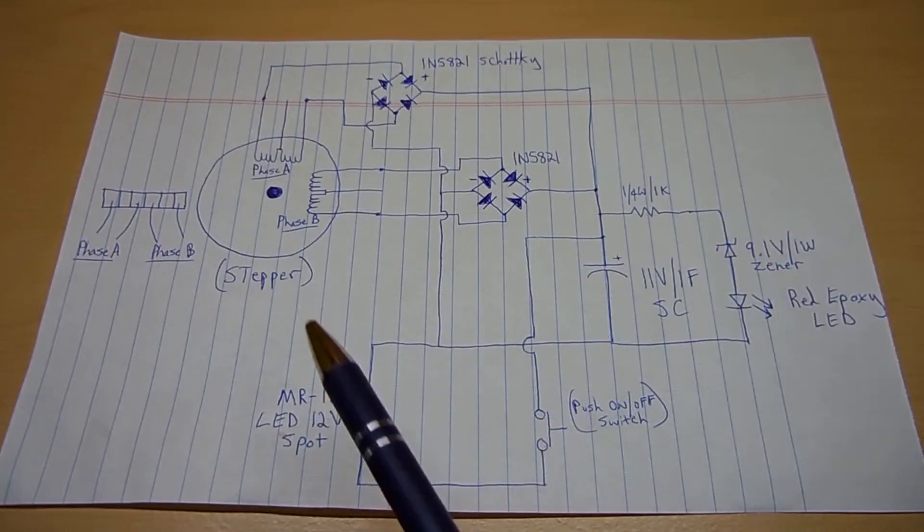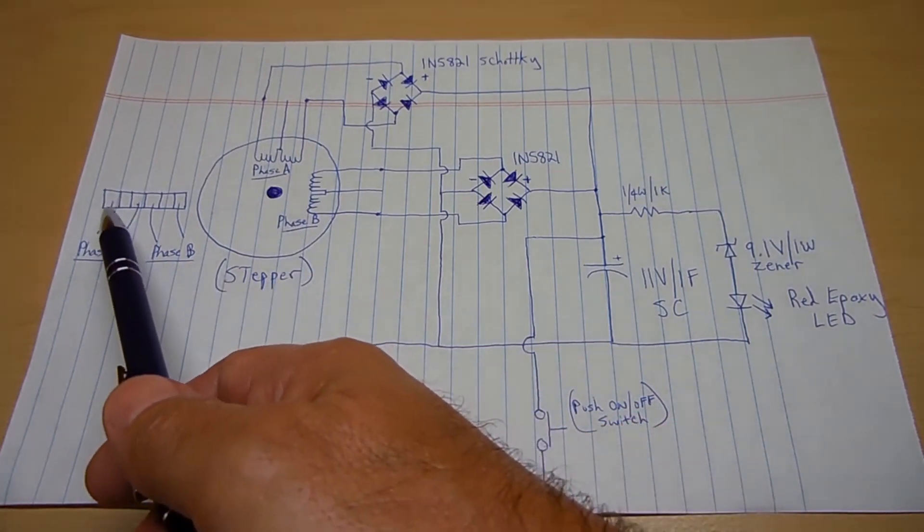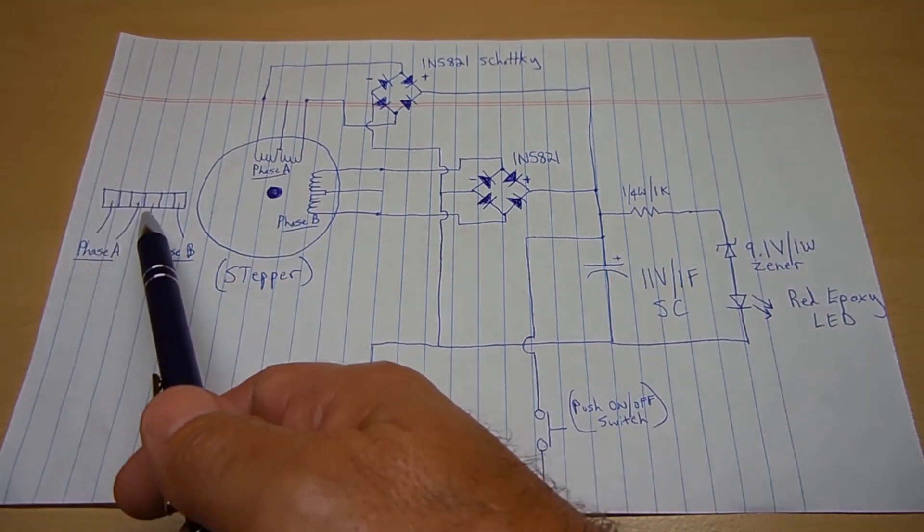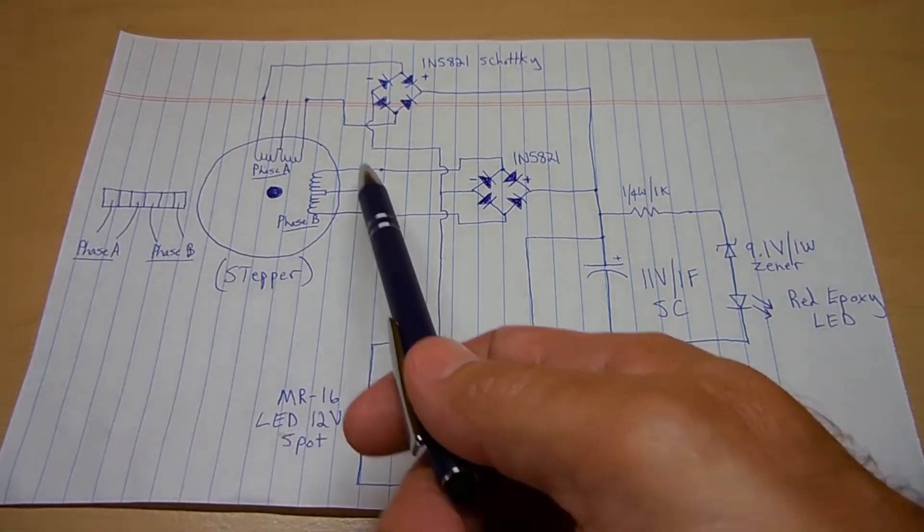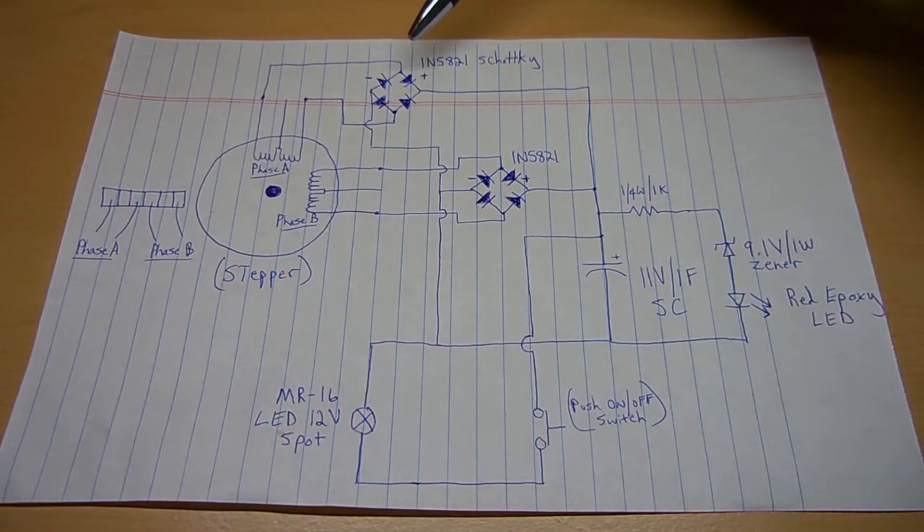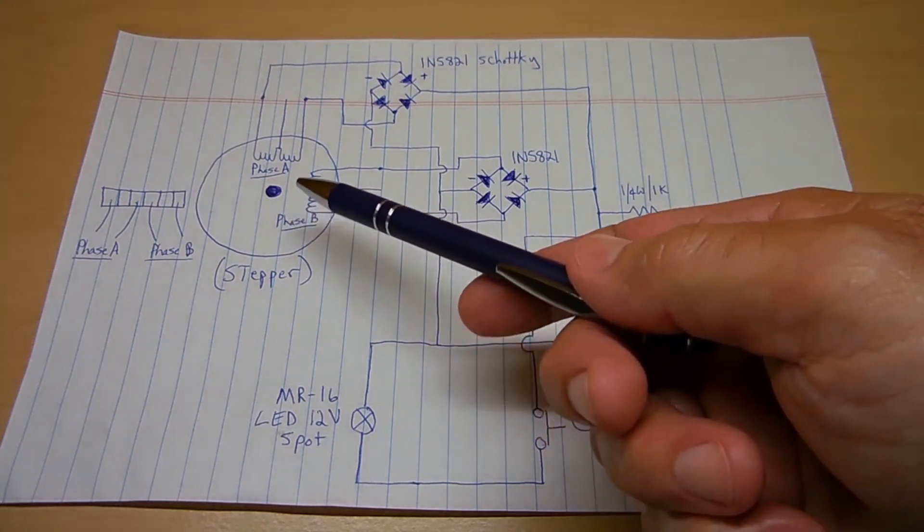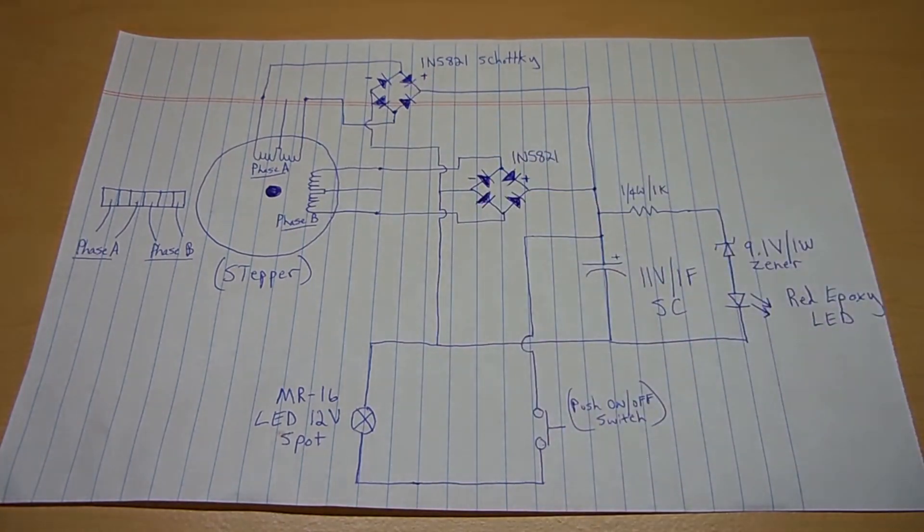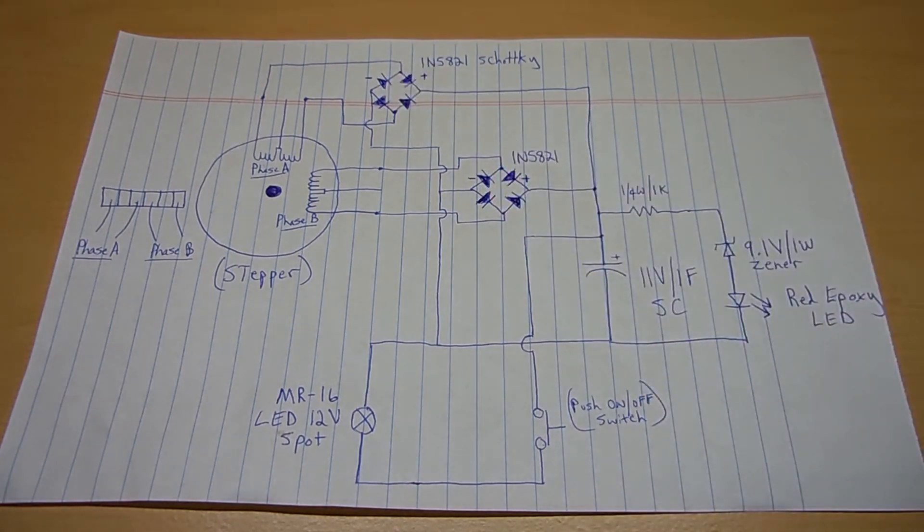Alright, this is the schematic for my crank generator. You can see phase A, phase B, as previously shown. It's a 6-pin stepper motor. Here, I'm using pin 1, pin 3 for phase A, pin 4, and pin 6 for phase B. The empty space here and there, that's there and there, is not used. And you can see I have a full wave bridge rectifier up here, as well as over there. Both use 1N5821 Schottky diodes. The purpose of using those diodes is to get the most amount of power out of that stepper motor to keep the losses as low as possible. Forward voltage drop on a typical diode is around 0.6 volts. With these diodes, it's only around 0.1 volts.